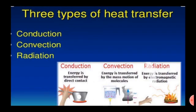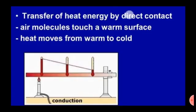There are three types of heat transfer: conduction, convection and radiation. Conduction is when energy is transferred by direct contact. Convection is when energy is transferred by the mass motion of molecules and radiation is when energy is transferred by electromagnetic radiation. Conduction is transfer of heat energy by direct contact. Air molecules touch a warm surface and heat moves from warm to cold.